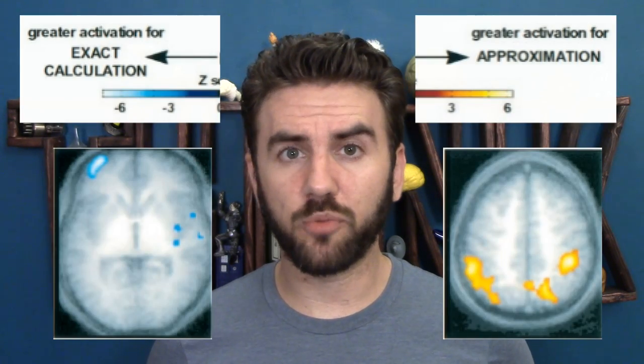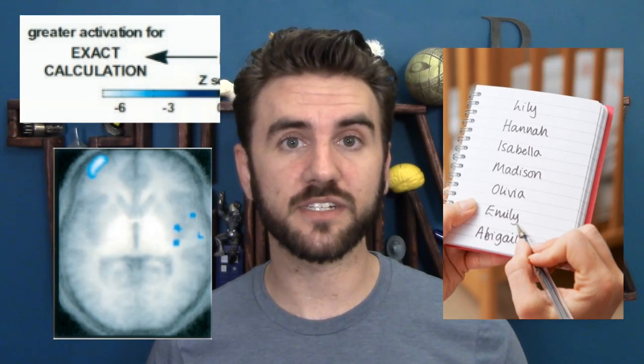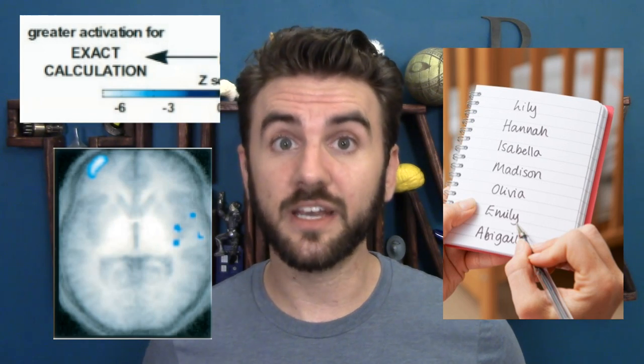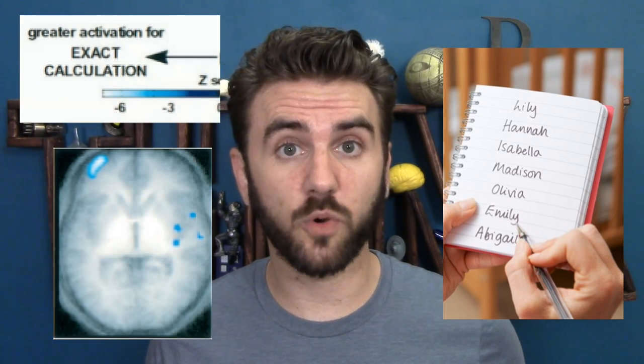The results solidified an idea which had been hinted at by several previous studies: we use totally different areas of our brain for approximation and calculation. When we're trying to figure out the exact right answer, regions responsible for verbal memory are most active, like what you'd use to memorize a list of names. There's a lot of research showing that our ability to process large numbers with precision depends on language, and this seems to support that.